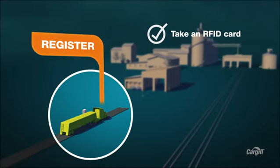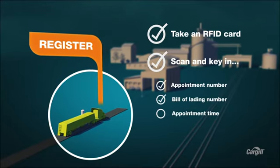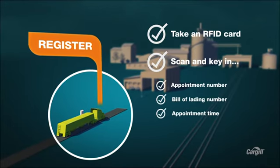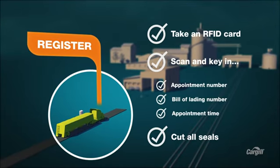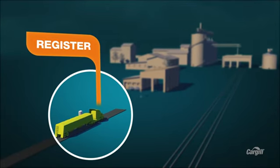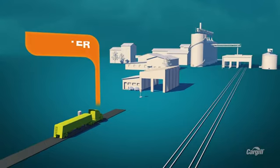Scan the RFID card and key in your appointment number, bill of lading number, and appointment time. Go ahead and cut any seals from the hopper gates and tarps. You can throw them out before you leave the crush plant in a designated receptacle.